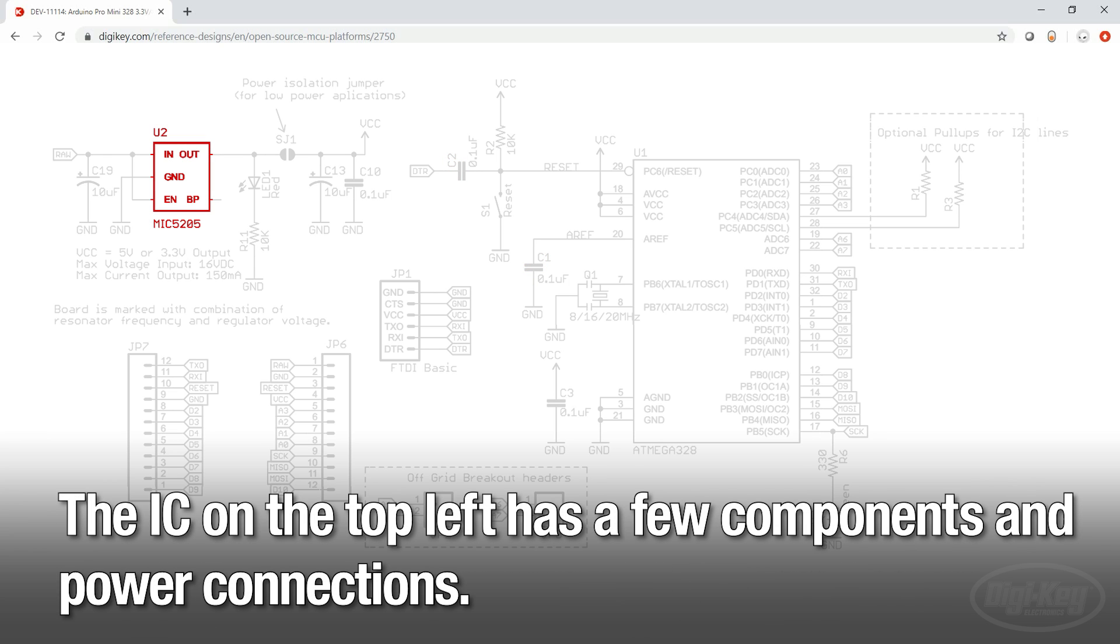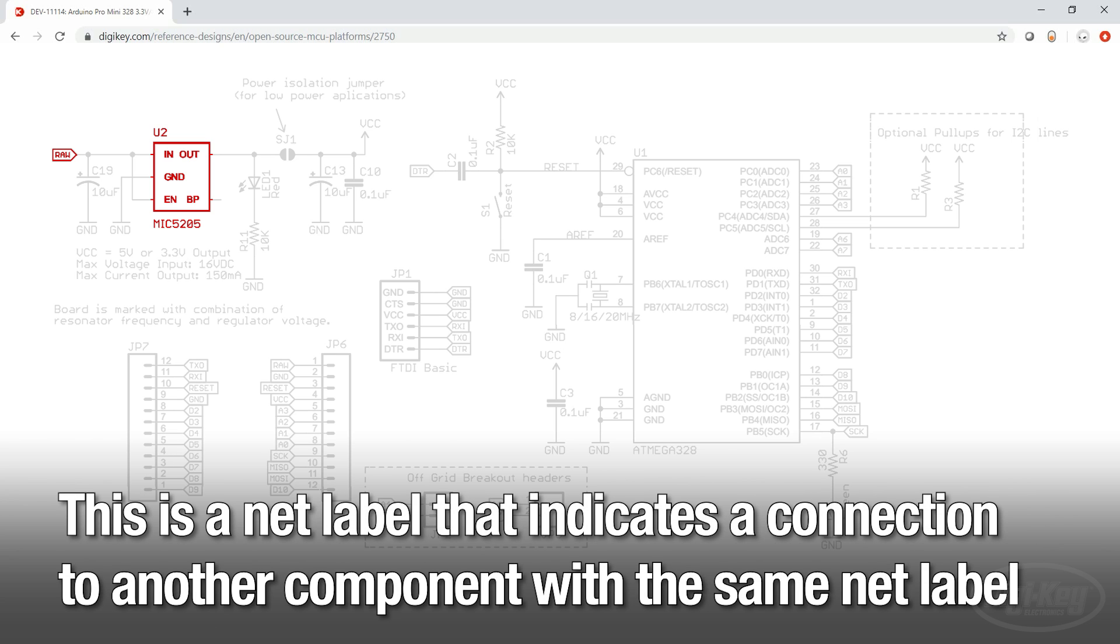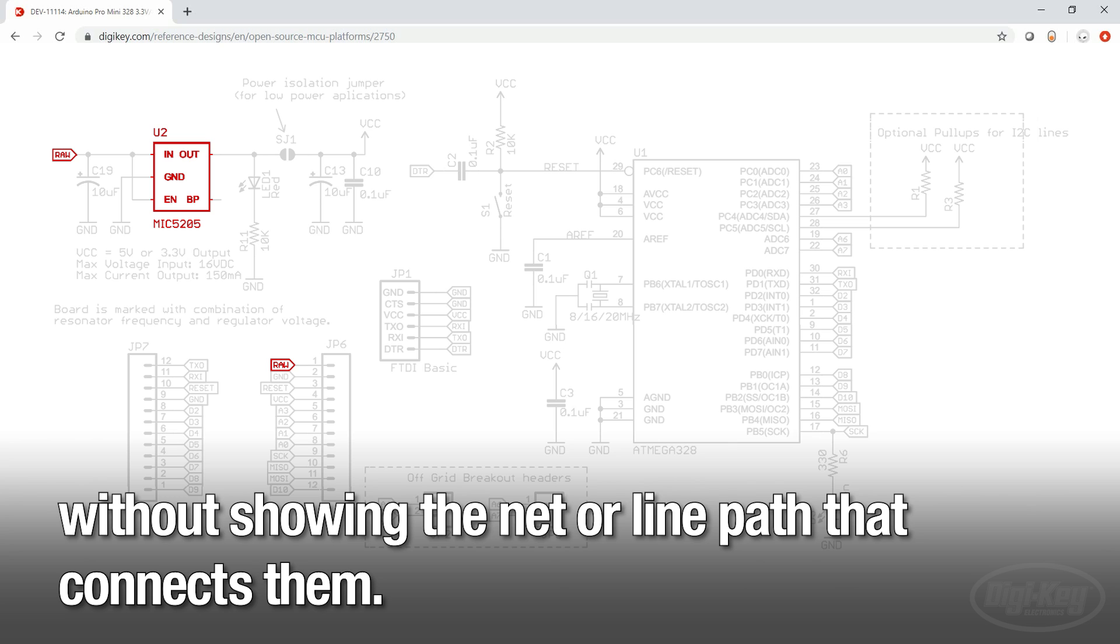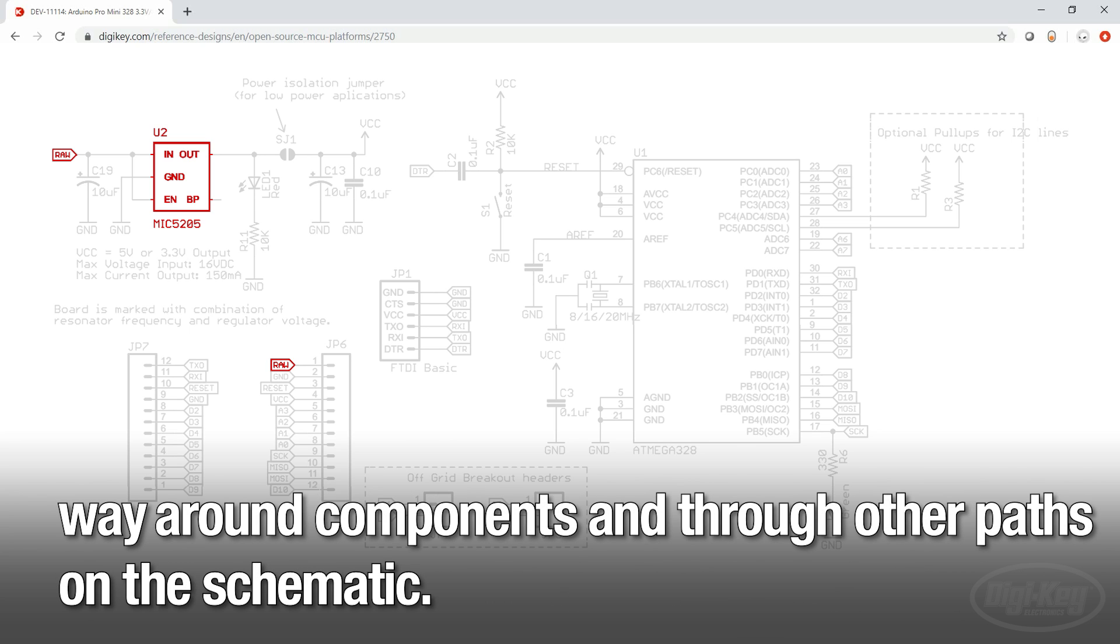The IC on the top left has a few components and power connections. Notice the net label or port on the far left that is labeled raw. This is a net label that indicates a connection to another component with the same net label without showing the net or line path that connects them. This method maintains simplicity and readability by eliminating scores of long paths winding their way around components and through other paths on the schematic.